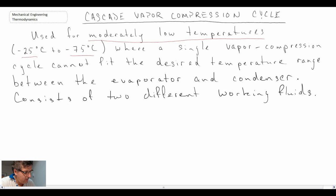What we'll do is we'll begin by looking at the process diagram and schematic. Then I'll write out an equation that shows us how to determine the coefficient of performance for a Cascade Vapor Compression Cycle.